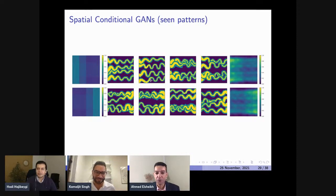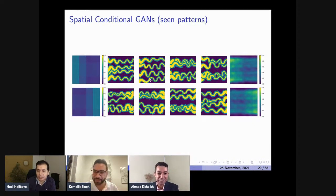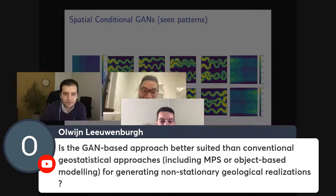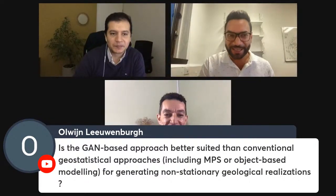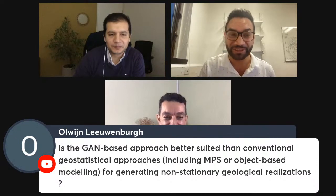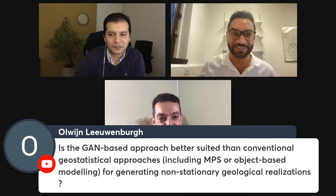The time is up, but there are many questions. One more very related question: is the GAN-based approach better suited than conventional geostatistics approaches, especially for generating non-stationary geological realizations? This depends on the use. MPS are commercial libraries tested and evaluated over ten years — we can't understate this effort, which resulted in very high quality results. If we are just generating realizations of non-stationary fields, MPS will probably generate equally good, if not better results.